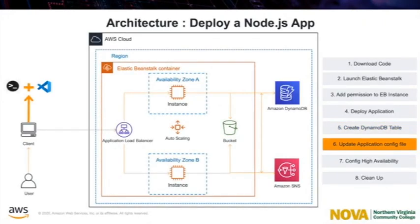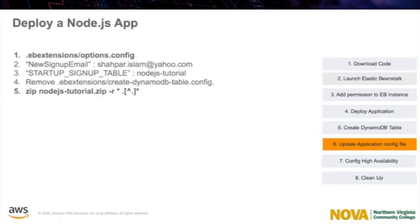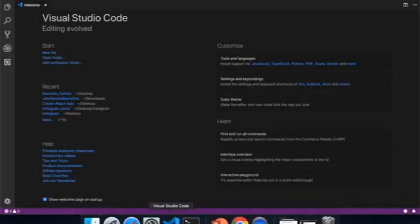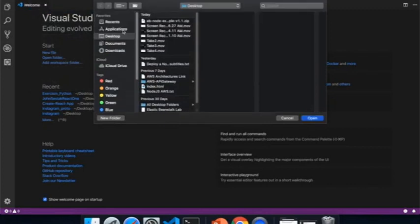Now, instead of creating a new DynamoDB table, we can update the configuration files in the application source to use the Node.js tutorial table. First, we will update the EB extension config file. We will replace the new signup email with the email we are going to use for signing up in our app, and replace the startup signup table value with our DynamoDB table name: nodejs-tutorial. Then we will remove the create DynamoDB config file. After all of this, we will zip the updated files from the command line.